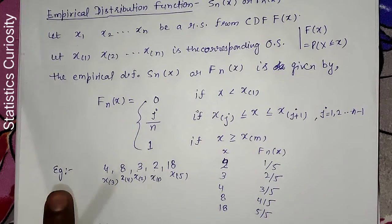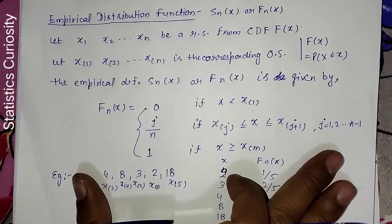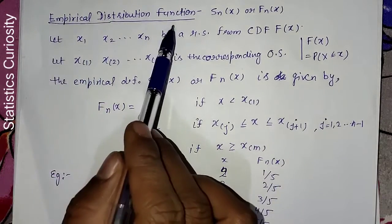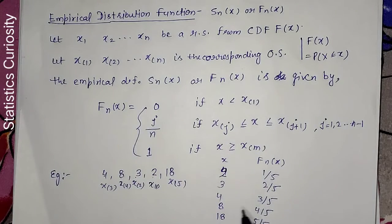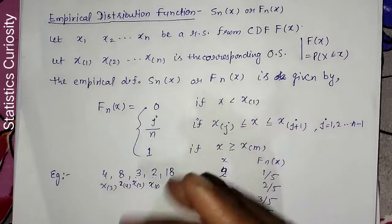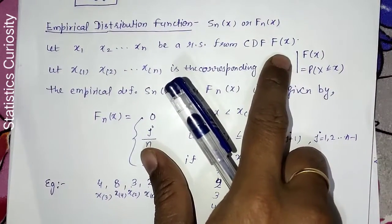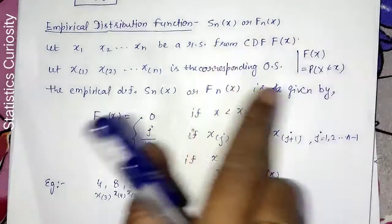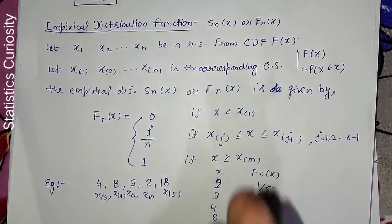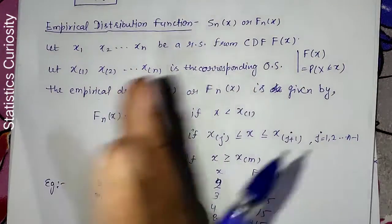In this way we can define the empirical distribution function and understand its importance. The empirical distribution function gives you the distribution function of the observed or sample data, while the CDF capital F(x) gives you the distribution function of the population.